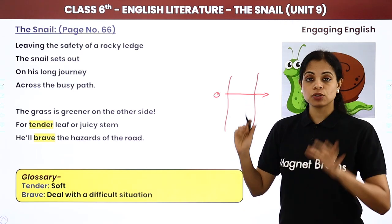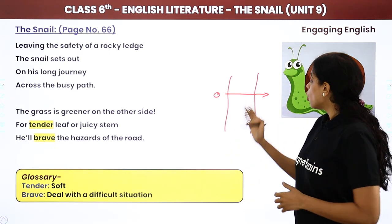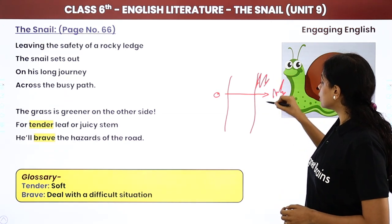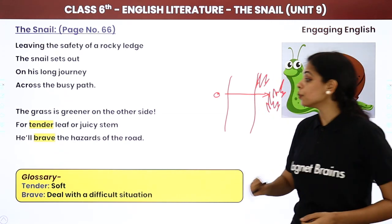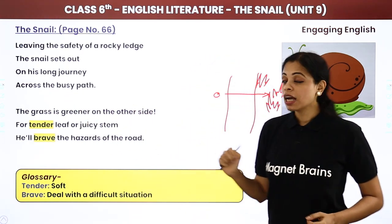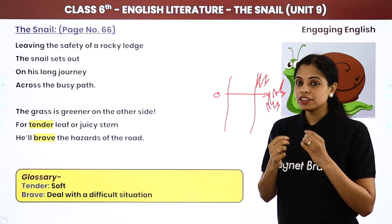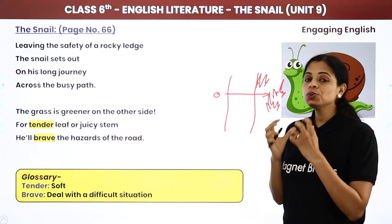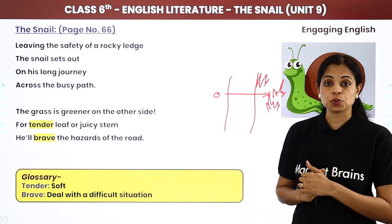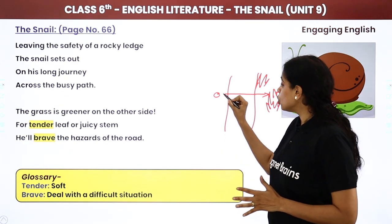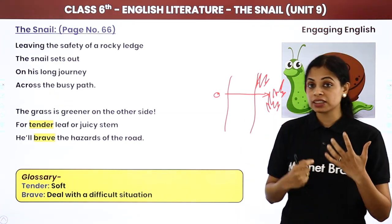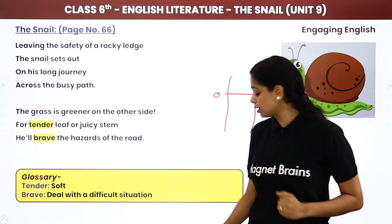'The grass is greener on the other side.' Ab yahaan pe agar snail hai, ek rocky ledge ke paas mein, on the other side joh ye grass hai, woh bohut hi zyadha green dikh rahi hai usko. 'For tender leaf or juicy stem' — ab koi ek tender si leaf jisko snail khaa sake, ya koi juicy si stem ke liye, he will brave the hazards of the road. Uske liye road pe chalke woh across the road jayega, aur road pe hone waale saare khatre ka saamna karega.